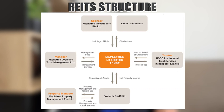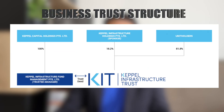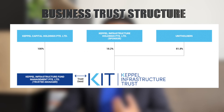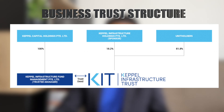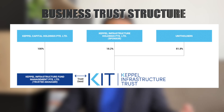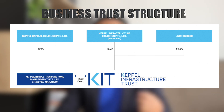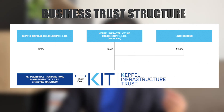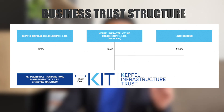Let's look at a business trust structure. This is Keppel Infrastructure Trust. The trustee and the manager is the same person — they are called Keppel Infrastructure Fund Management Private Limited. So the fund manager, or the business trust manager itself, is also the trustee.